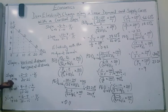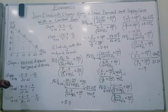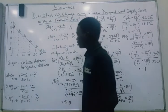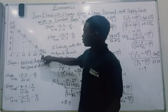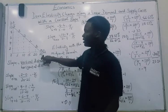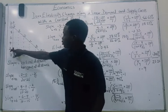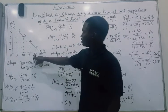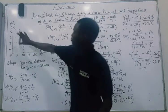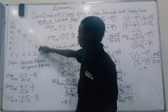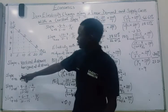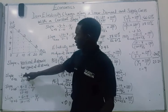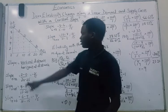We are going to check the slope from price zero to price two. When the price is zero, the quantity demanded is 25, and when the price becomes two, the quantity demanded is 20. To calculate the slope, it is what's on the price axis divided by what's on the quantity axis. We have triangle AB here. The change in price is 2 minus 0.